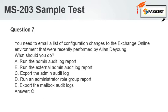Question 7. You need to email a list of configuration changes to the Exchange Online environment that were recently performed by Alan Young. What should you do? A. Run the admin audit log report. B. Run the external admin audit log report. C. Export the admin audit log. D. Run an administrator role group report. E. Export the mailbox audit logs. Answer: C.